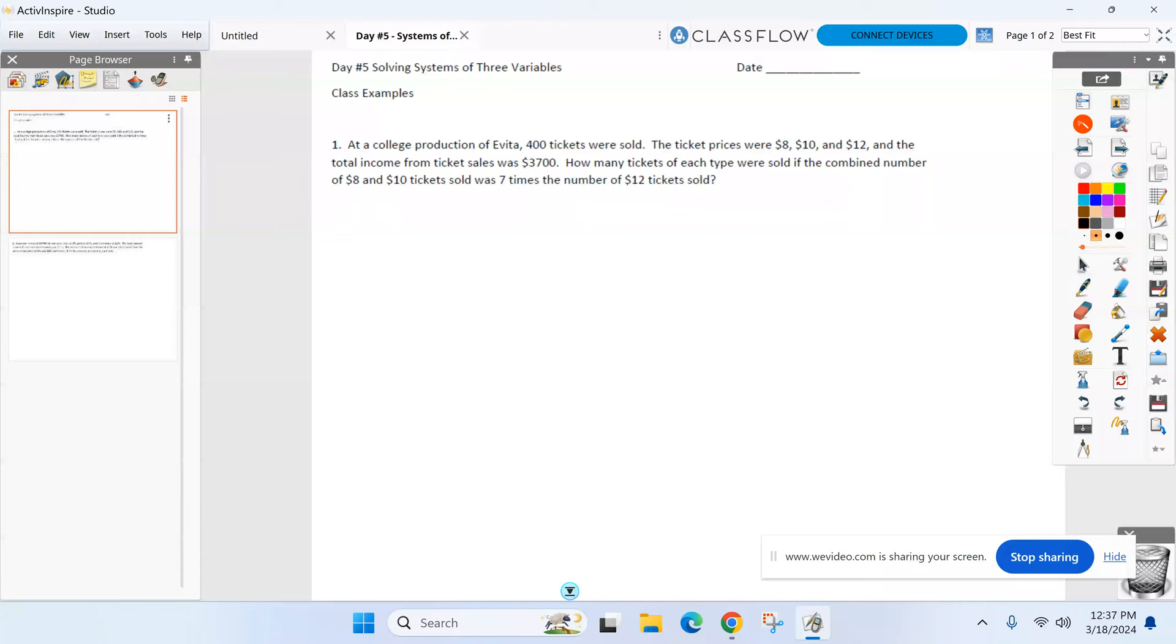When I'm doing these, I told you guys when we did the two equations, two variables, you could really name them whatever variable you wanted. When we're doing three equations, three variables, I stick with X, Y, and Z. I'll let X equal the number of $8 tickets. We'll let Y equal the number of $10 ones we sell. And Z will equal the number of $12 tickets.